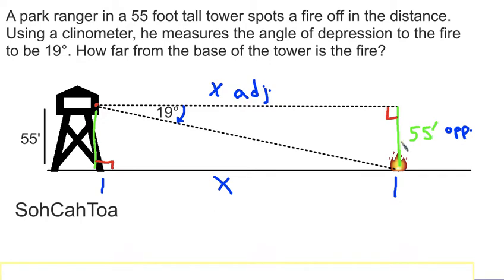So 55 is opposite, that's given. The x, what we're looking for, that's the adjacent. As mentioned earlier, the tangent ratio is the one that's going to help solve this, because it involves both the opposite and the adjacent.